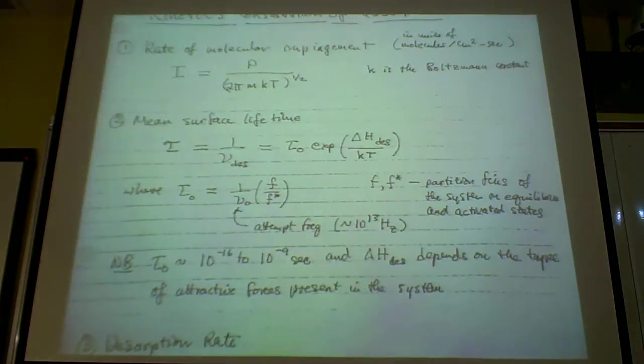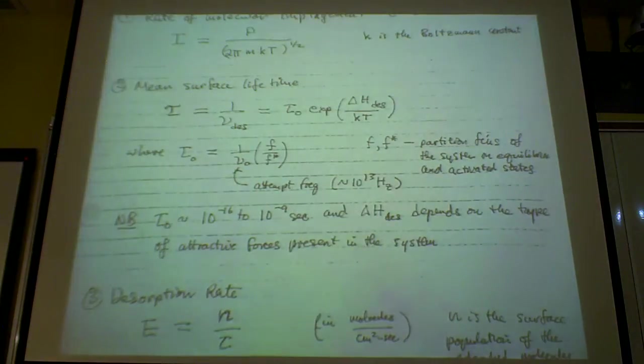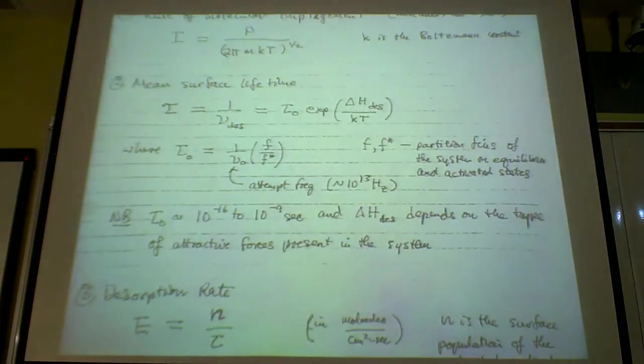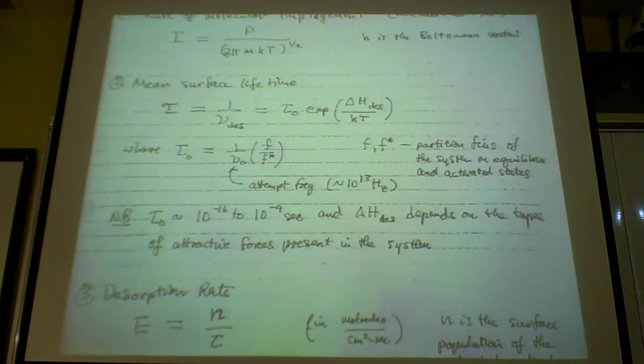And then there's this tau knot, which is kind of a constant related to this particular surface. So this is proportional to this inverse attempt frequency, which is under normal one-atmosphere-type pressure, at least up to 10 to 13 Hertz. It's the amount of particle hitting your surface per unit time.